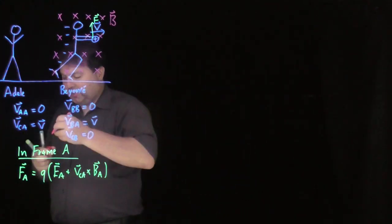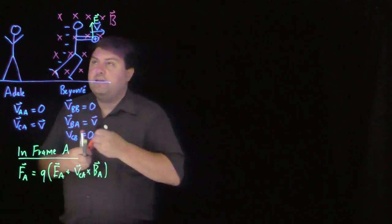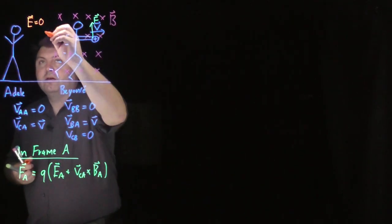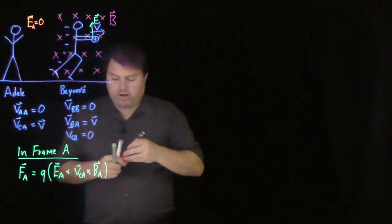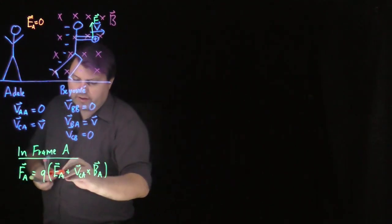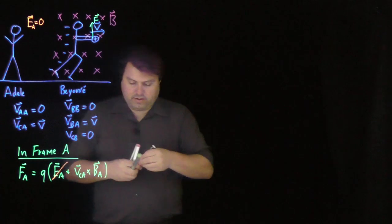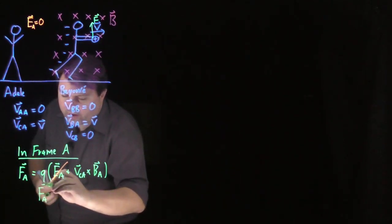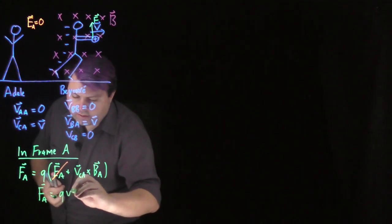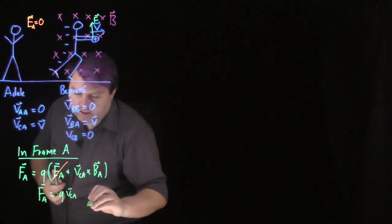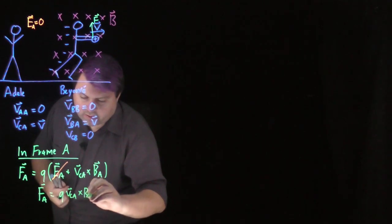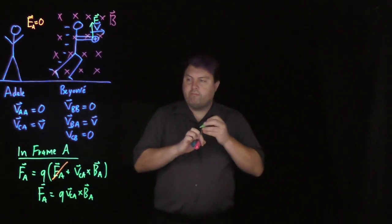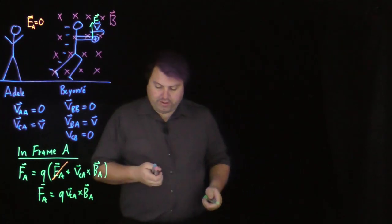So we are saying in this that our electric field E is zero in this frame A. So if it's zero, then we have this. And then we have that the force in frame A is Q, the velocity of the charge in A crossed with the magnetic field in A.